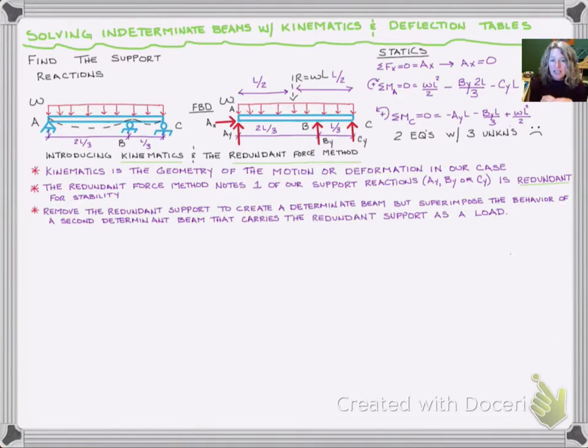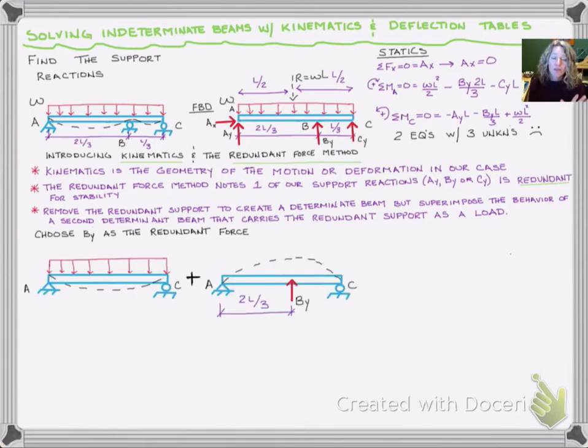What we do is take this apart using superposition. We remove one of the redundant supports and create a new determinate beam. Then we take the same support configuration, create another beam, and add our redundant support as a force. We add those together and make sure they behave like the original beam. Let's choose BY as the redundant force and see what this looks like.